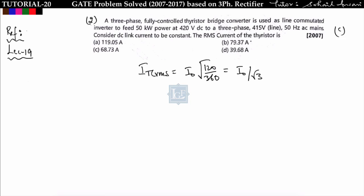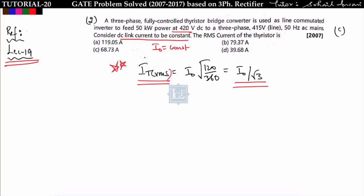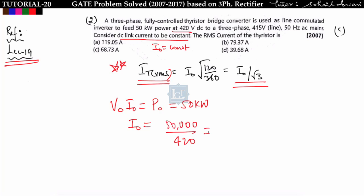See the next problem. A three-phase fully controlled thyristor bridge converter is used as a line-commutated inverter to feed 50 kW power at 420 volt DC. The DC link current i0 is constant. The RMS current of the thyristor — as derived in lecture 19 — each thyristor conducts for 120 degrees, so I_T_rms equals i0 times root of (120/360), which equals i0 divided by root 3. To find i0: V0 times i0 equals output power 50 kW, and V0 is 420 volt, so i0 equals 50000 divided by 420, equal to 119.04 ampere. Putting i0 into the formula gives I_T_rms equal to 68.73 ampere — option C.